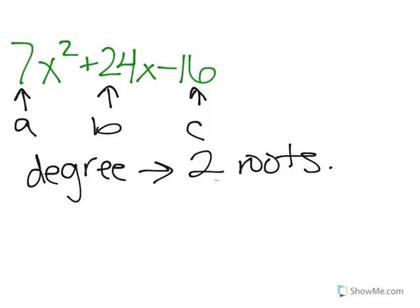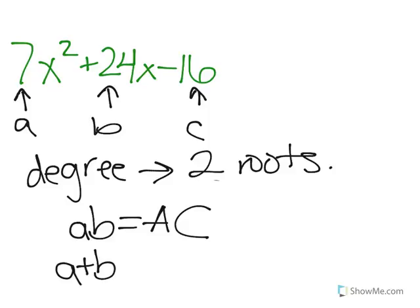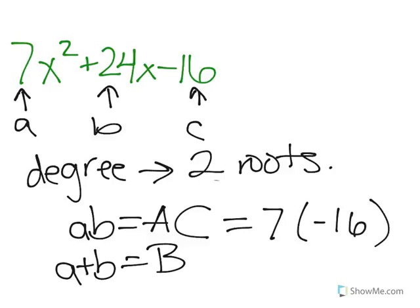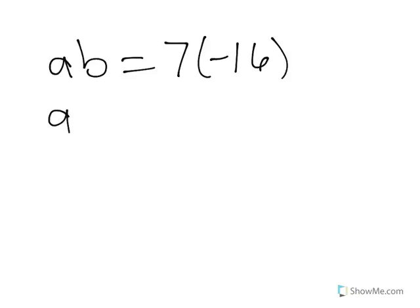So we will find 2 numbers that give you a times c when you multiply them up, and when you add them up, they give you b. So a times c is equal to 7 times negative 16, and b is equal to 24. We want to find a times b which is equal to 7 times negative 16. We want to find a plus b which is equal to 24.